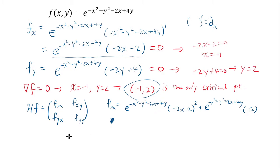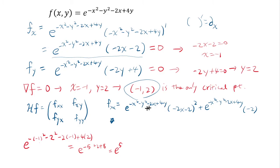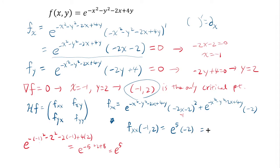Evaluating at x = negative 1, y = 2: the exponent becomes negative 1 minus 4 plus 2 plus 8 = 5, so the exponential is e to the 5. Plugging x = negative 1 into (negative 2x minus 2) gives positive 2 minus 2 = 0, so that squared term vanishes. Therefore fxx at negative 1 comma 2 equals negative 2 times e to the 5.